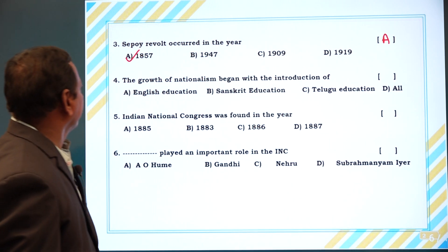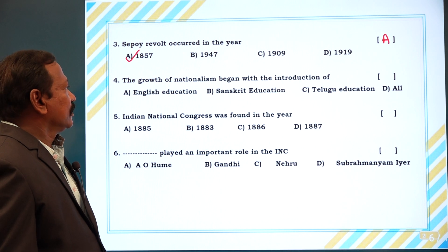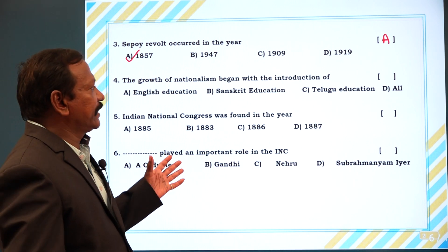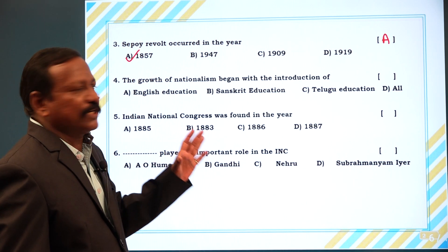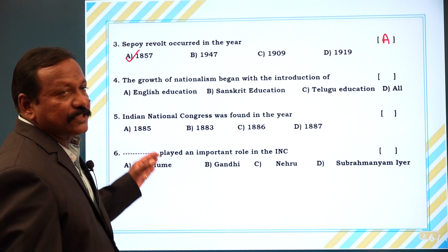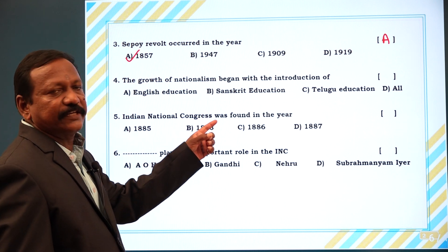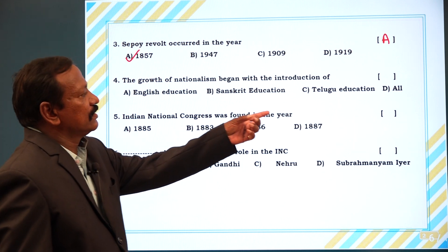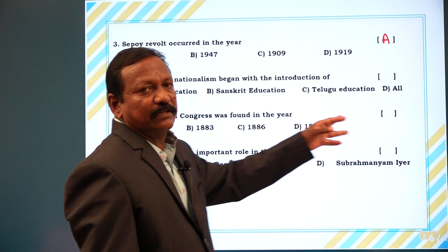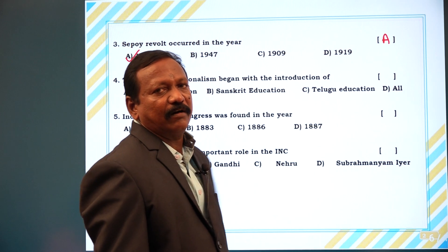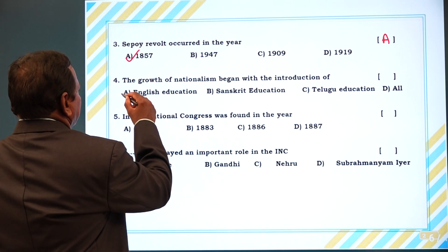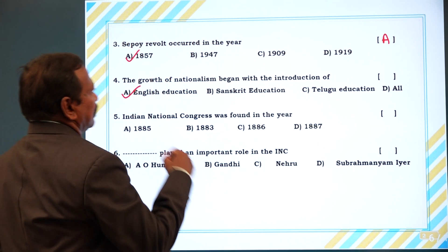Fourth question: The growth of nationalism began with the introduction of — A. English education, B. Sanskrit education, C. Telugu education, D. All. Answer is A. English education.